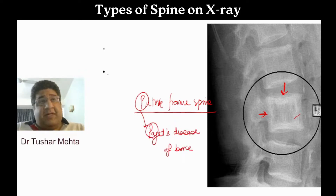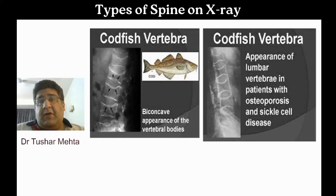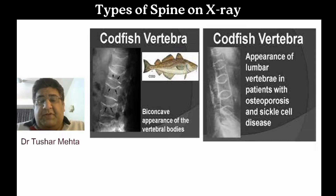Picture frame spine is classically seen in Paget's disease of bone. To summarize: M for mouth spine, M for Malacia; R for renal osteodystrophy, R for rugger jersey spine; P for Paget's disease, P for picture frame spine.